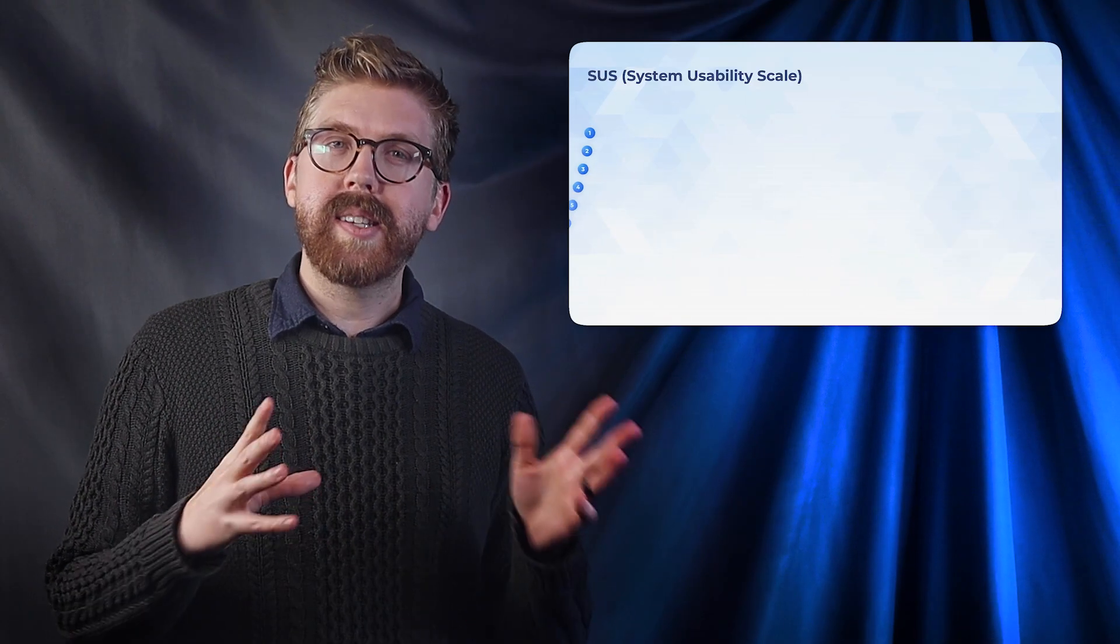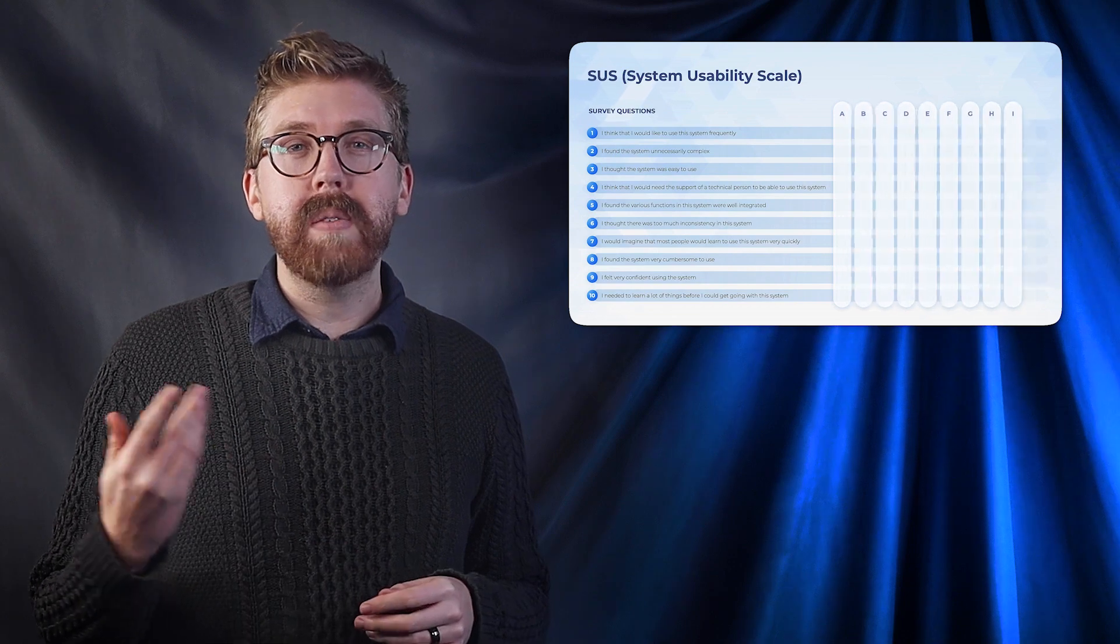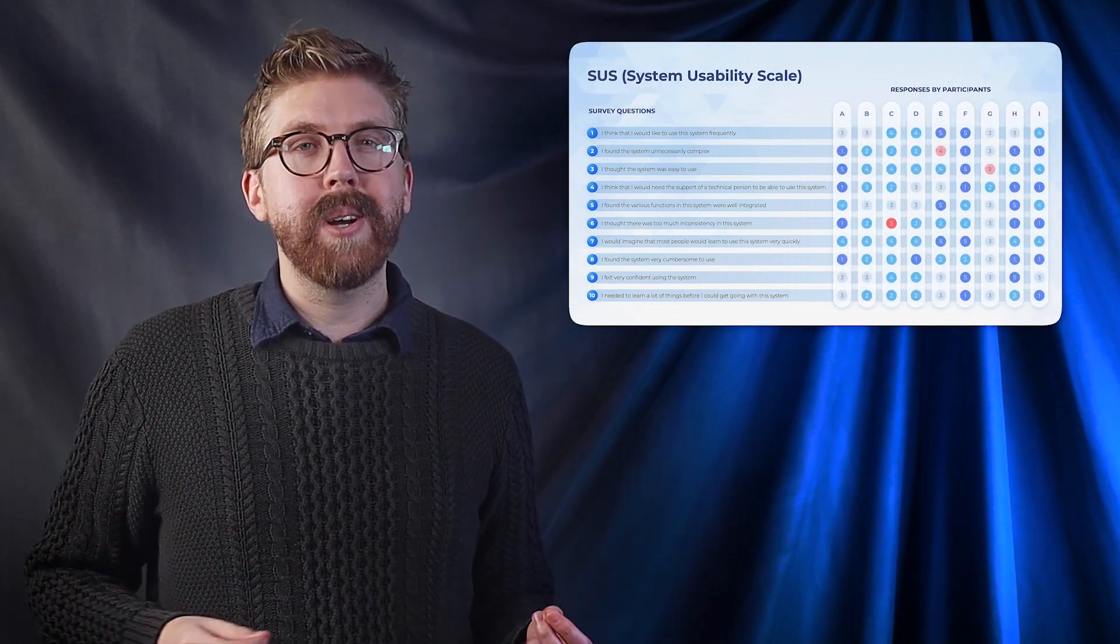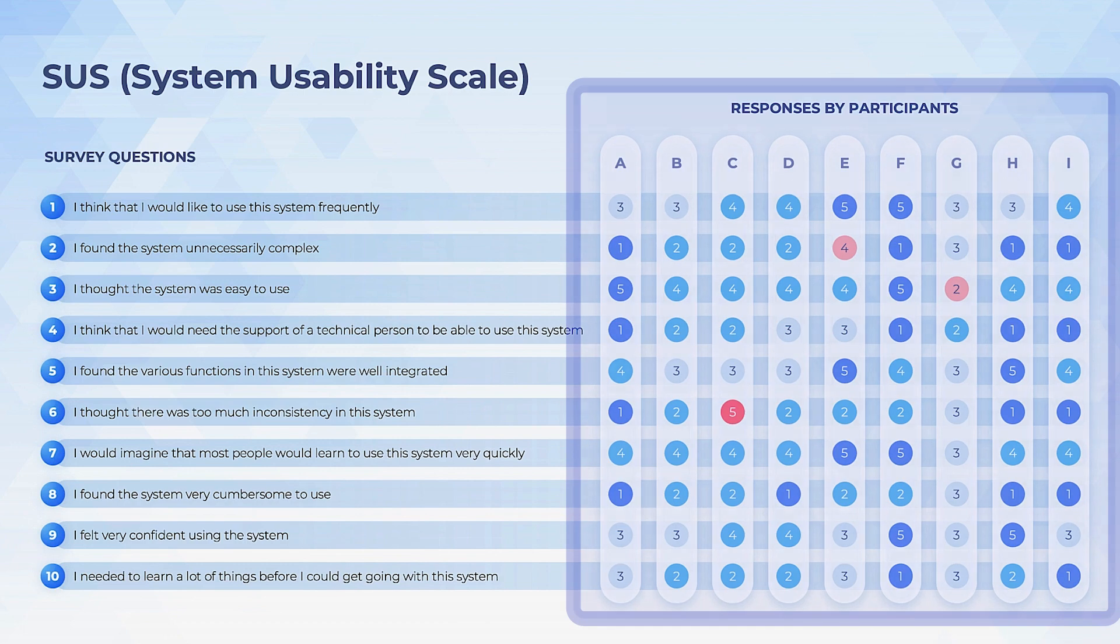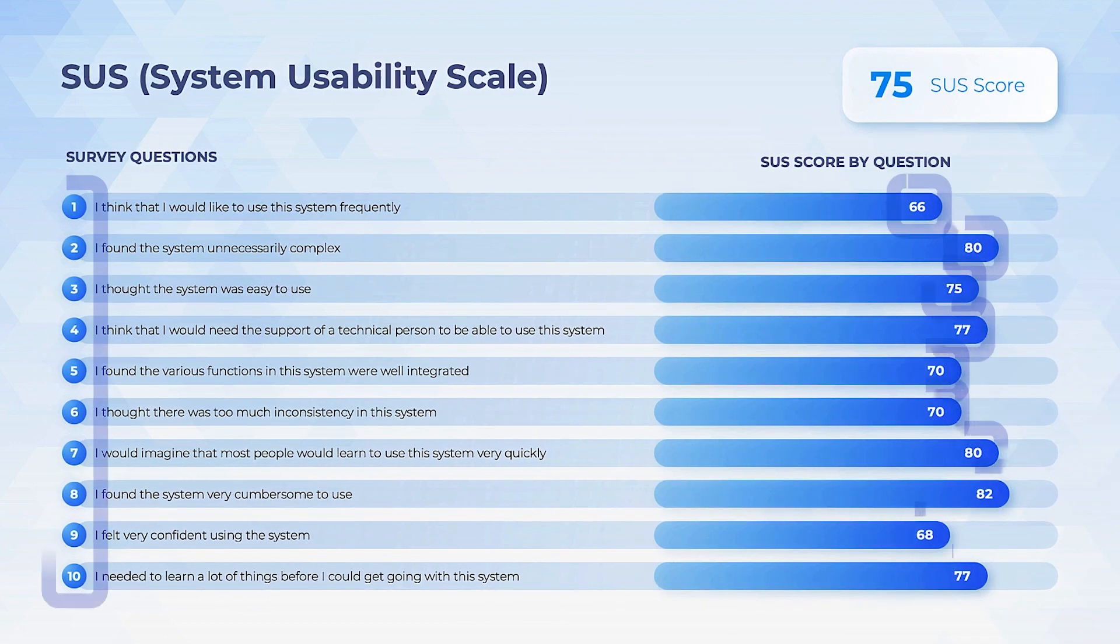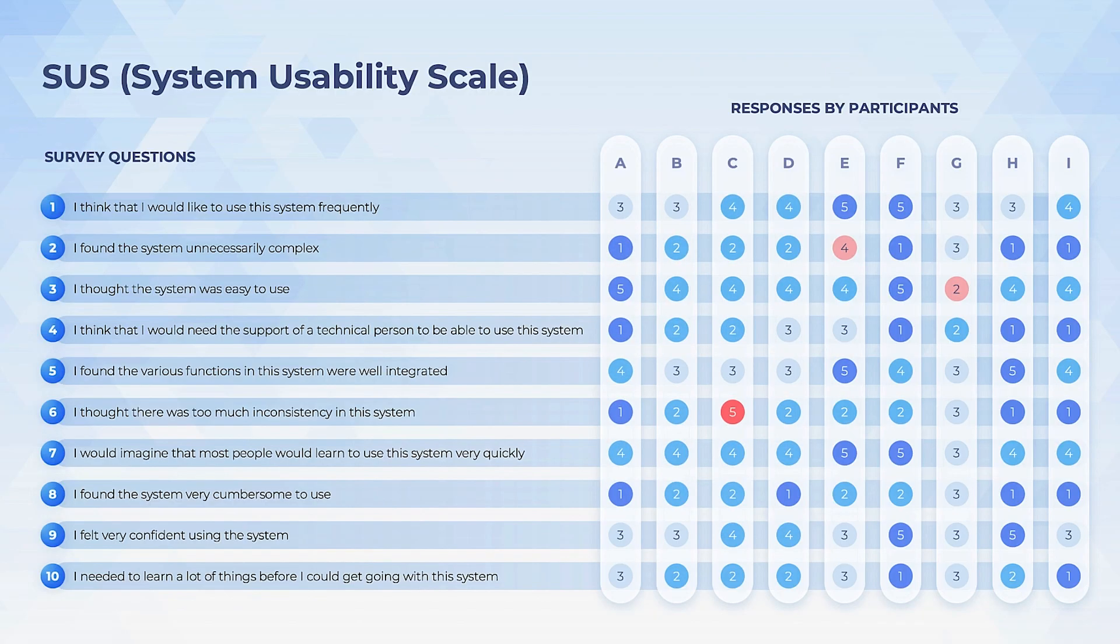Similarly, the System Usability Scale, or SUS, obtains individual responses to survey questions. It then uses these responses to calculate a total usability score for each question.